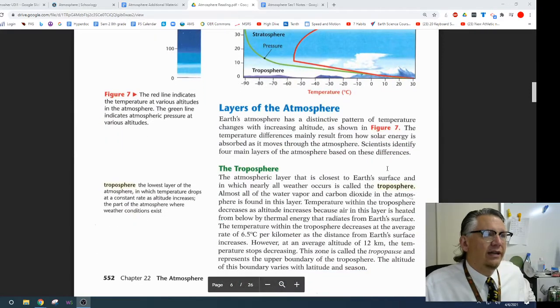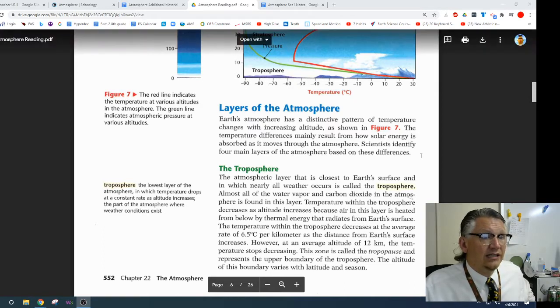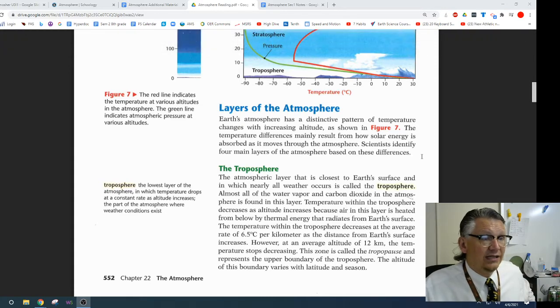Layers of the atmosphere. Earth's atmosphere has a distinctive pattern of temperature changes which increase with increasing altitude as shown in Figure 7. The temperature difference mainly results from how solar energy is absorbed as it moves through the atmosphere. Scientists identify four main layers in the atmosphere based on these differences.